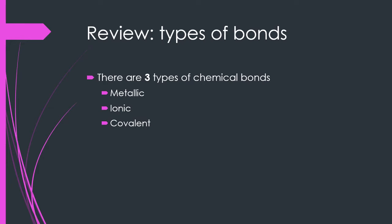In ionic bonds, a cation and anion are attracted to each other — these cation and anion were formed by the transfer of electrons. In a covalent bond, which is generally between two non-metals, electrons are very tightly shared between two or more nuclei.